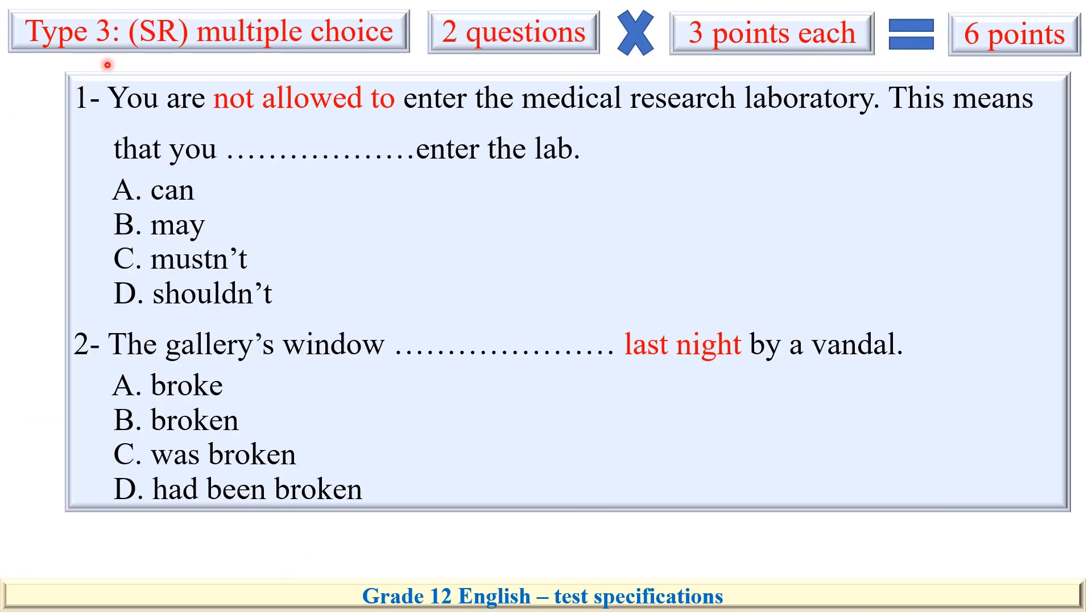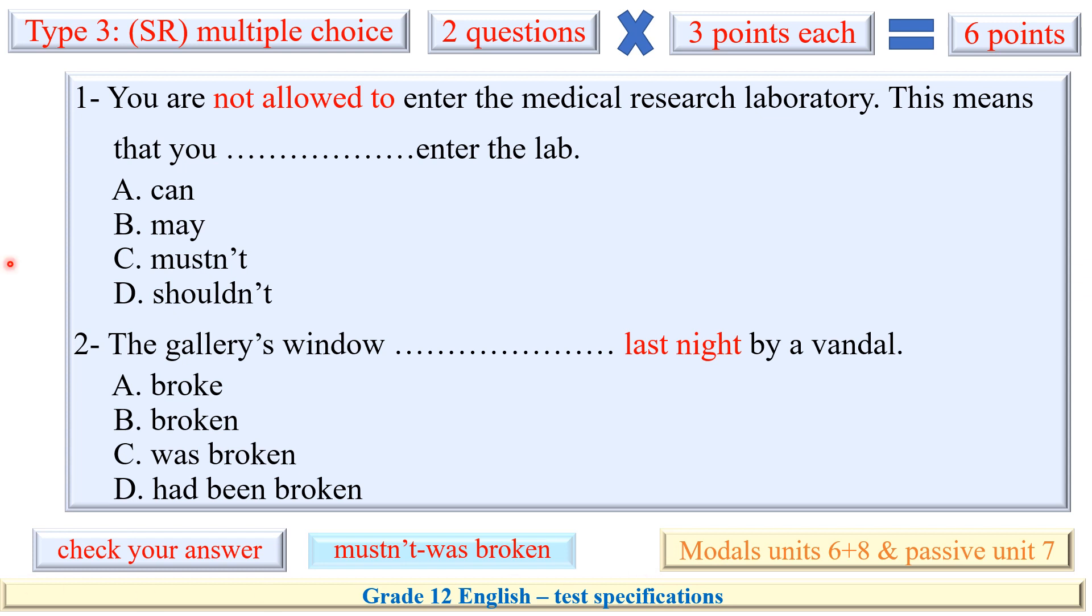The last type of grammar questions is SR, specific response questions, just two questions. One about the modal verbs of unit six and eight, and one about the passive voice, grammar of unit seven. But pay attention, each one for three points. Please stop here for just a minute and think of the answer. Take this feedback. You are not allowed means exactly you mustn't, and this passive is about the past simple - was broken is okay. More details are here.